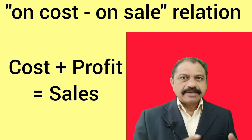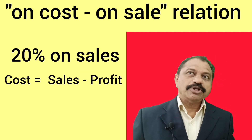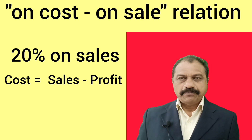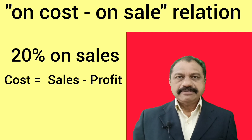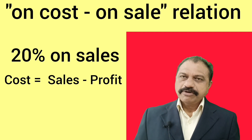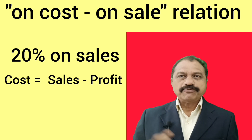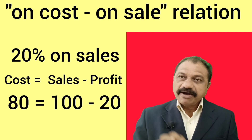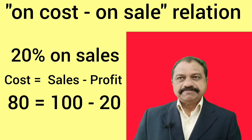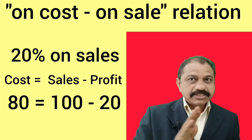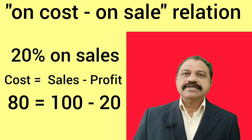See example number one. Suppose profit is 20% on sales. Here 100 stands for sales. Therefore cost is equal to sales minus profit — that is 100 minus 20 is equal to 80. So cost is 80, profit is 20, and sales is 100.